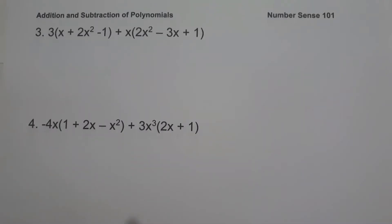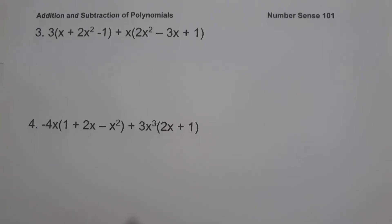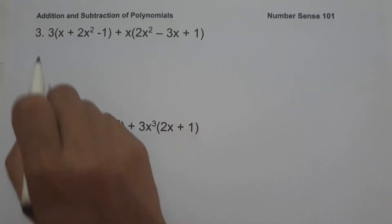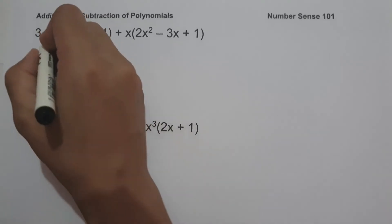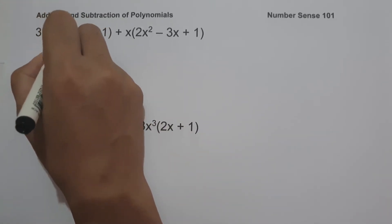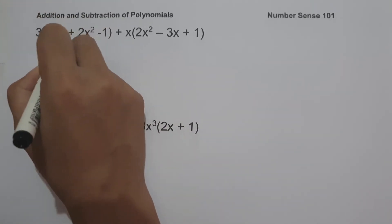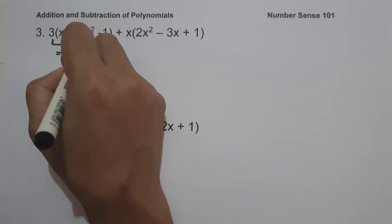On example number 3, we have 3 times the quantity x plus 2x squared minus 1, plus x times the quantity 2x squared minus 3x plus 1. The first thing we are going to do to simplify this is to distribute 3 and x inside the parentheses. So 3 multiplied by x is 3x.